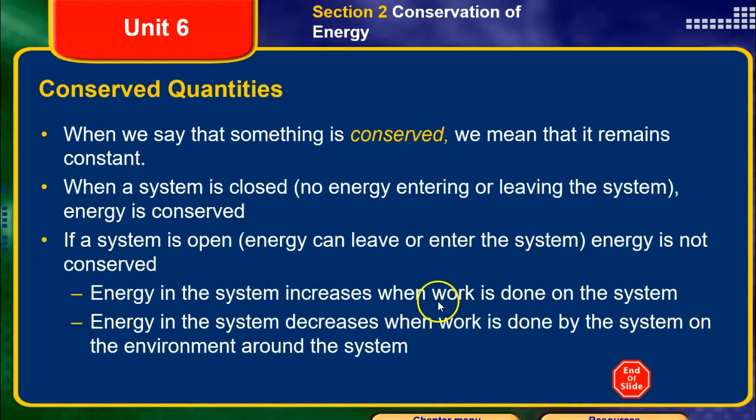When work is done on something, you add energy to it, so the energy of the system increases. And when work is done by the system — so it expands and releases energy — that makes the energy in the system decrease. So the amount of energy doesn't stay the same in those situations when it's an open system, when energy can go back and forth.